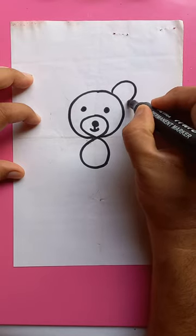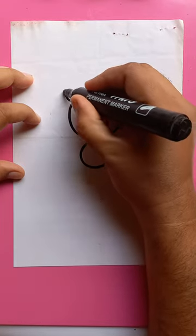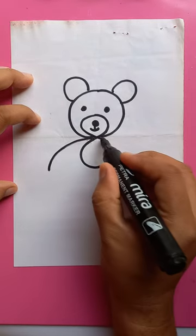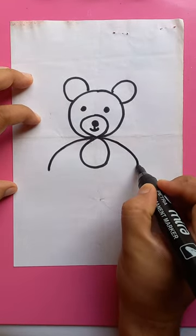Put two ears. Another ear on this side. Then draw something like half circle here for the lower part of number 8.